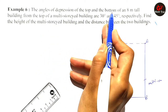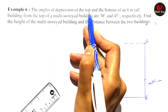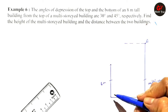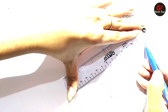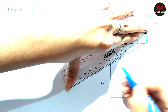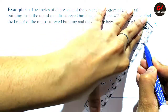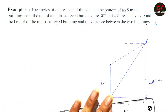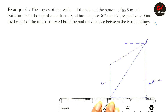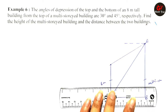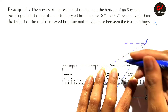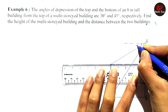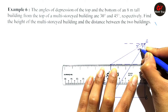The angle of depression is from the top, so the top and bottom of the 8-meter building both make angles from the top of the multi-storied building — 30 degrees and 45 degrees. We draw a horizontal line from the top of the multi-storied building, and mark the angles: 30 degrees and 45 degrees.